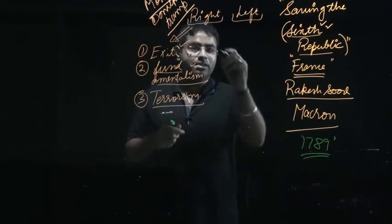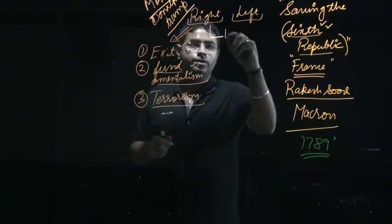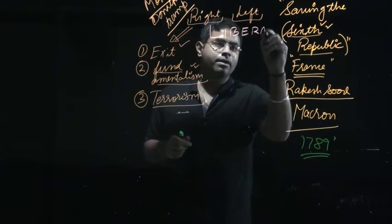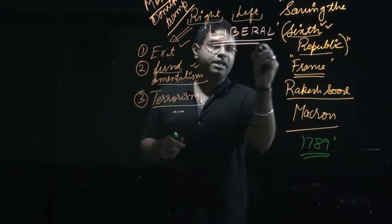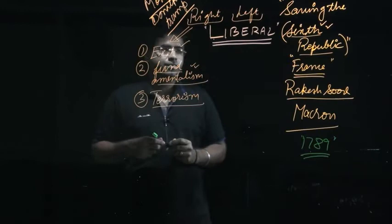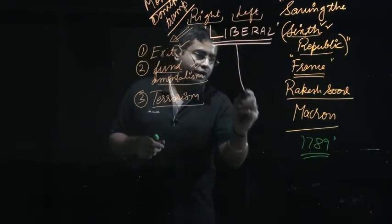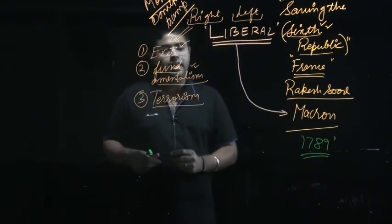It means that they were against the liberal values - liberal values of equality, liberty, fraternity that have been given by France. Now Macron, he has to take on himself the responsibility to sustain this liberal aspect.